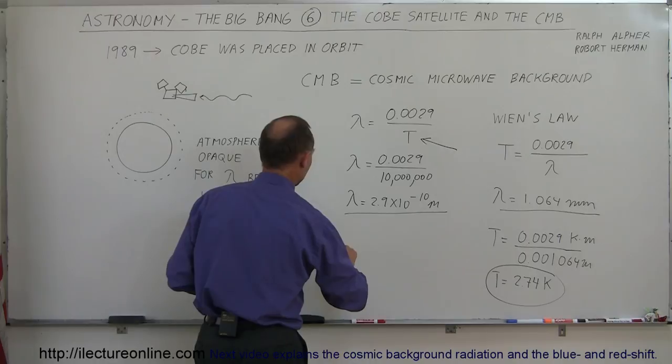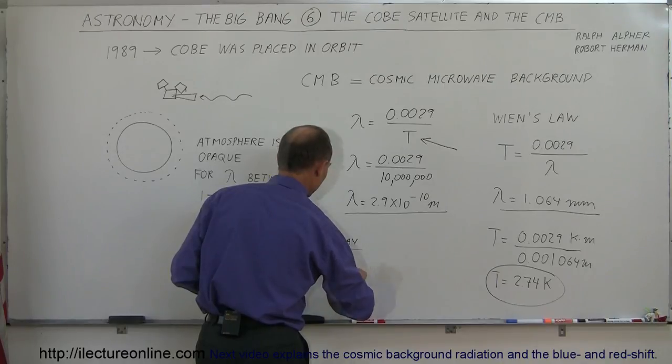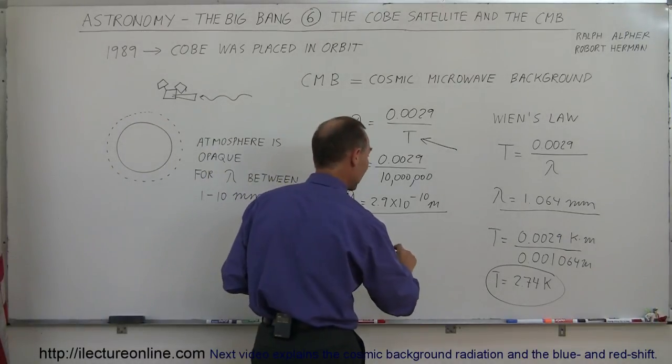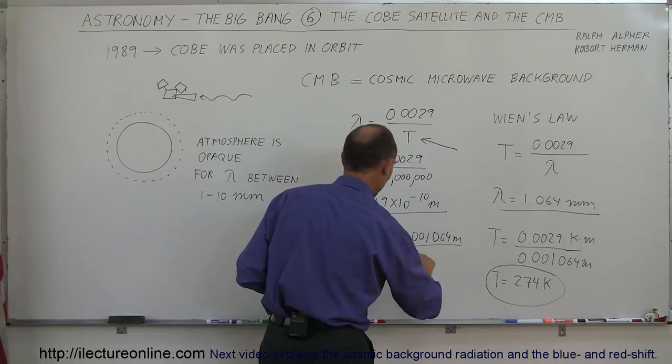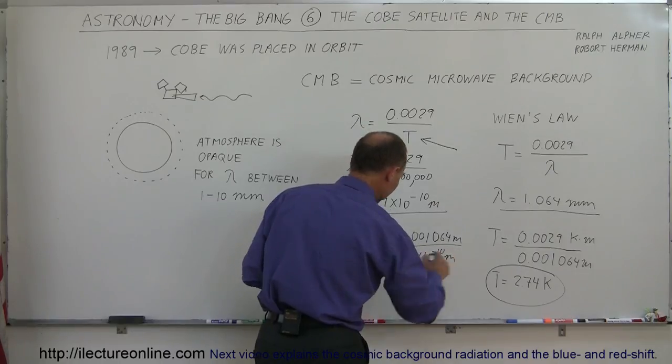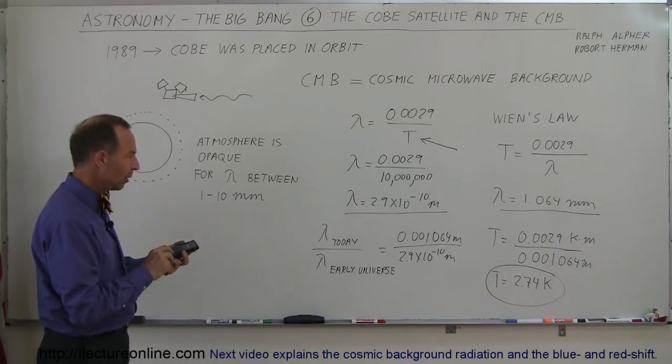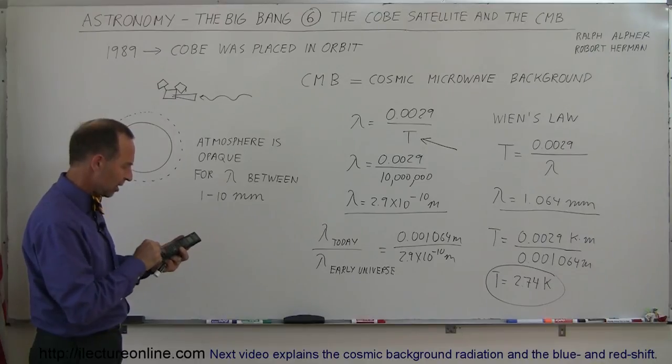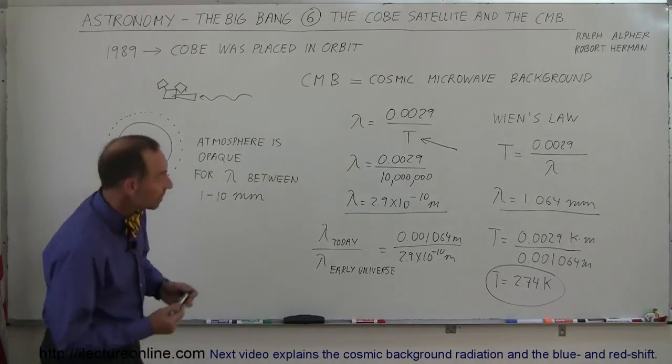So, lambda today, the wavelength today, divided by the wavelength of the early universe. So, that ratio will show us how much the universe has grown in size. So, this is equal to today, would be 0.001064 meters, and back then it was 2.9 times 10 to the minus 10 meters. So, what ratio is that? How much has the universe grown in radius since that time? And so, when we go back, we go 0.001064 divided by 2.9 exponent 10 minus equals, and I need to convert that to different units, 3.7 million times.